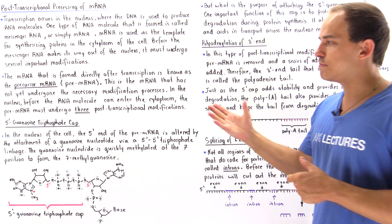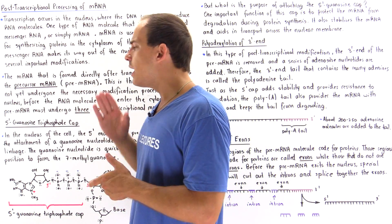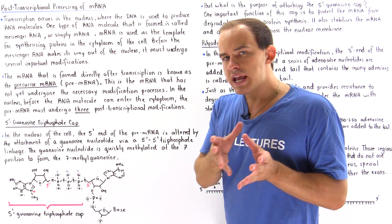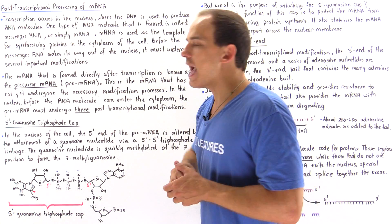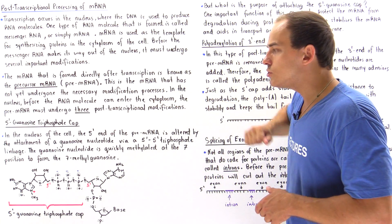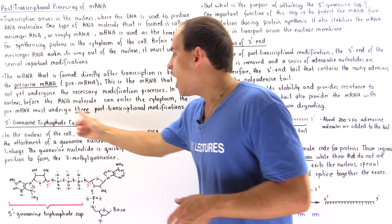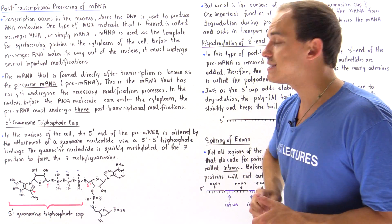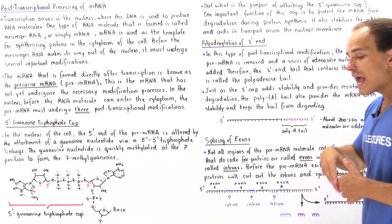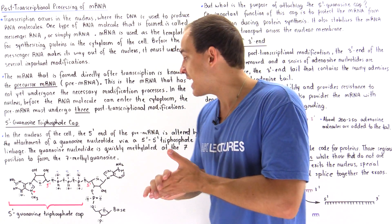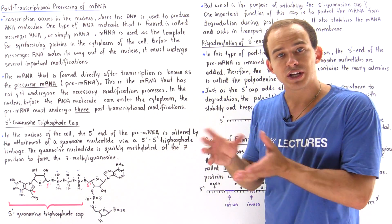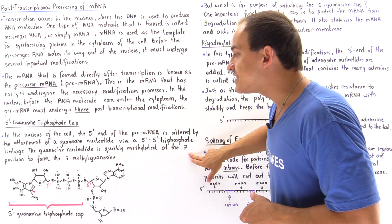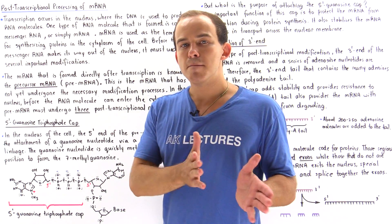Let's begin with the addition of the 5' guanosine triphosphate cap. Within the nucleus of the cell, before our pre-mRNA actually leaves the nucleus, the 5' end of the precursor mRNA is altered by the attachment of a guanosine nucleotide via a special type of linkage known as the 5'-5' triphosphate linkage. The guanosine nucleotide is also altered by methylation of the 7-position to form the 7-methylguanosine nucleotide.